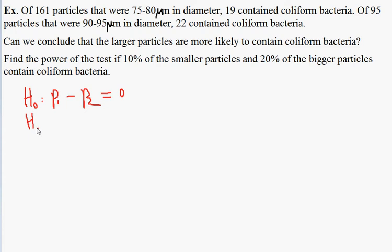The alternative hypothesis will be that the two proportions are different, and in particular that the second one — the bigger particles — contain more bacteria than the first, so that when I subtract the small ones from the big ones, I get something less than zero. The first sample is the smaller particles and the second is the bigger particles. It's perfectly okay to reverse this convention, but we must keep it consistent for the entire problem.